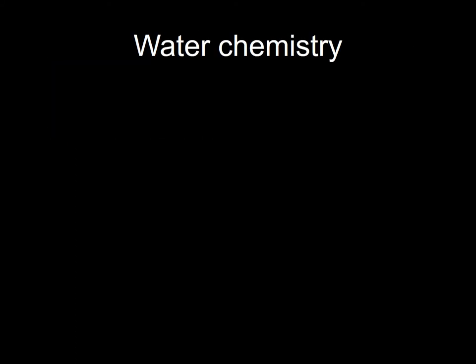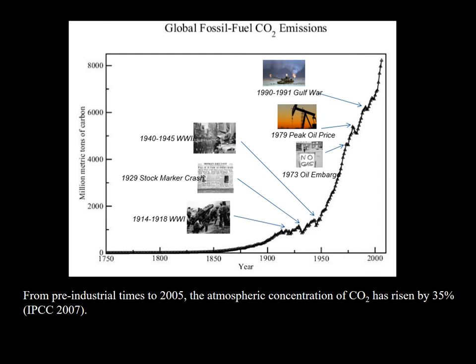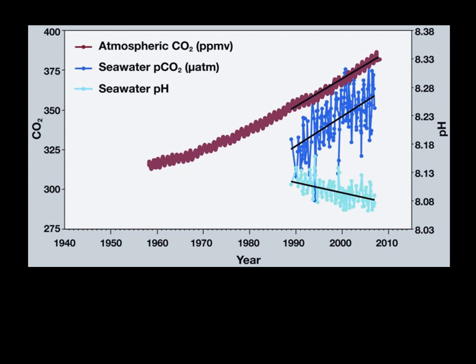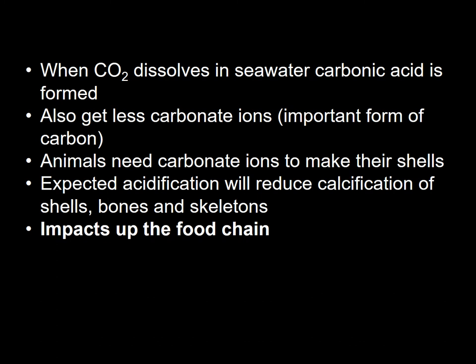Climate change also causes changes in water chemistry. From pre-industrial times to 2005, the atmospheric concentration of carbon dioxide has risen by 35%. About half of this man-made CO2 has been absorbed by the oceans, and one of the primary impacts is that the water becomes acidic. This figure depicts what's happened with atmospheric CO2 in seawater as well as a decrease in pH over time. When CO2 dissolves in seawater, carbonic acid is formed and you get less carbonate ions, which animals need to make their shells. It's expected that acidification will reduce calcification of shells, bones and skeletons, with impacts up the food chain.